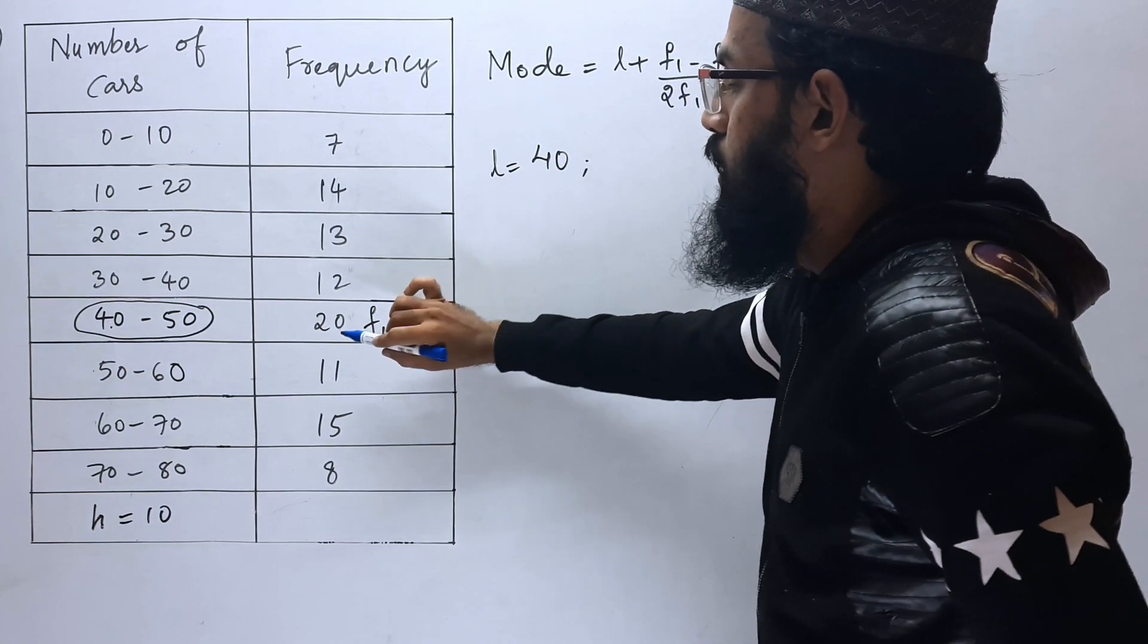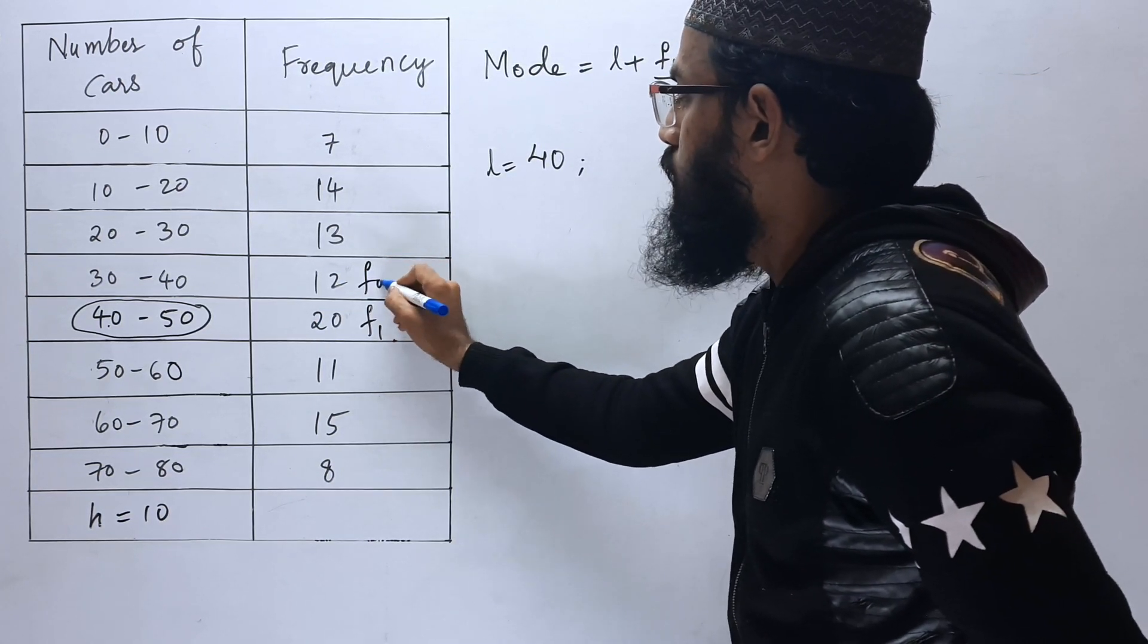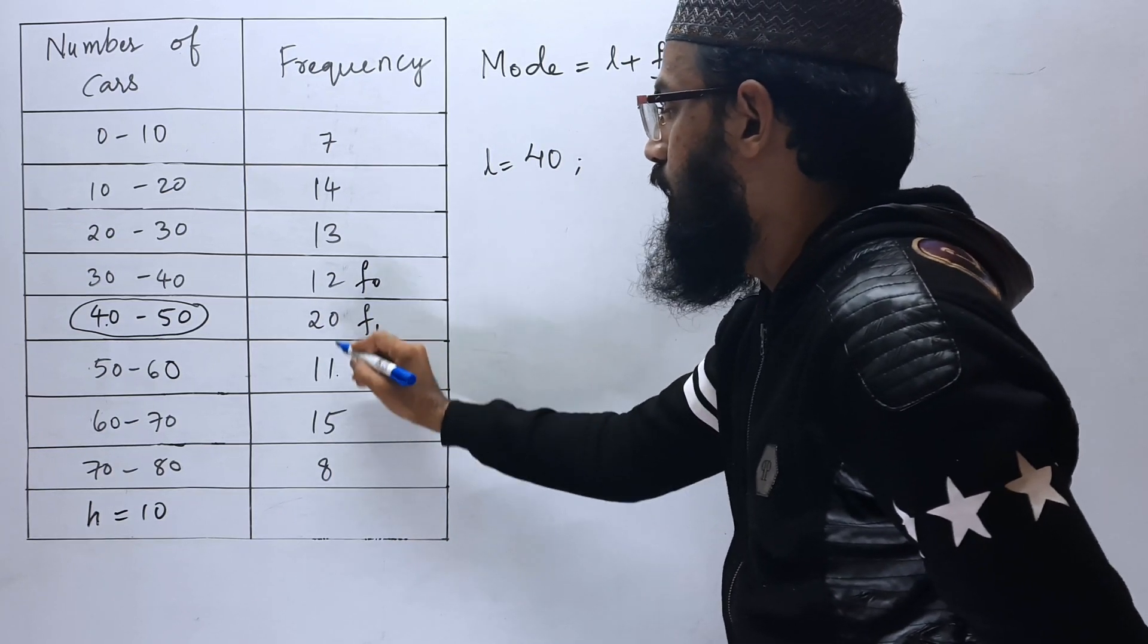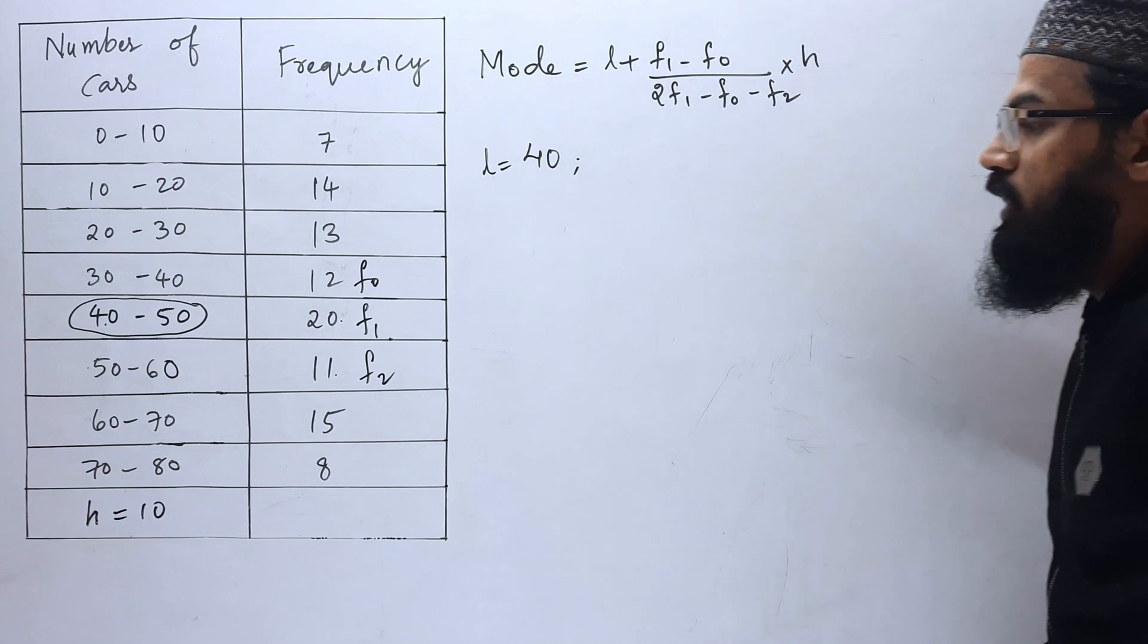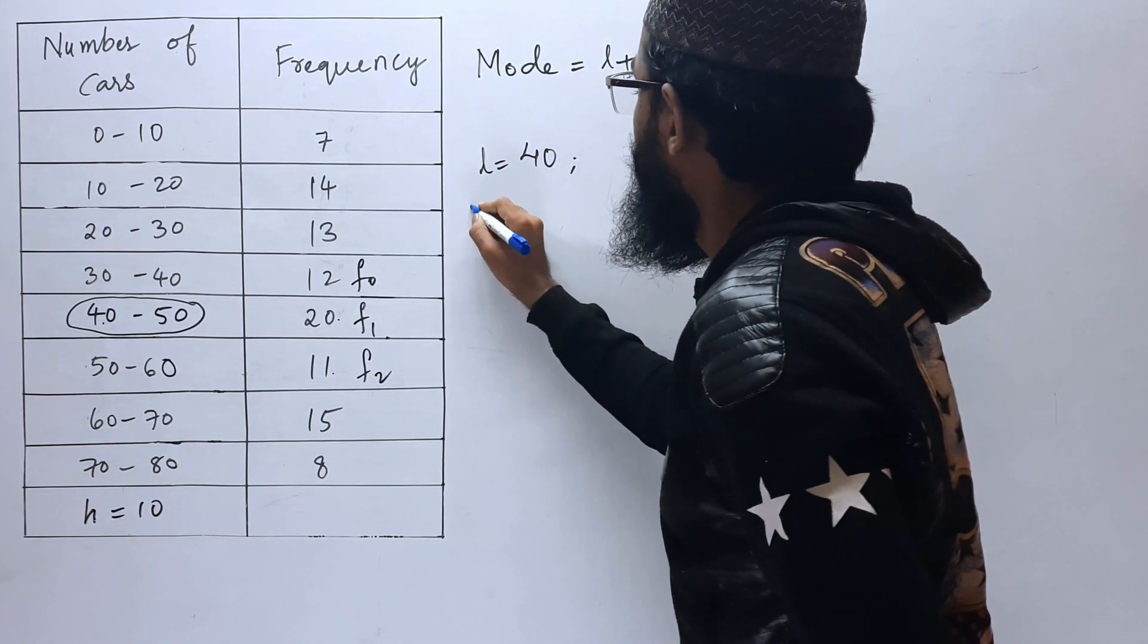Next, for F0. F0 is the frequency of the class preceding the modal class. Next, F2 is the frequency of the class succeeding the modal class, so that is 11. Now, let us substitute.